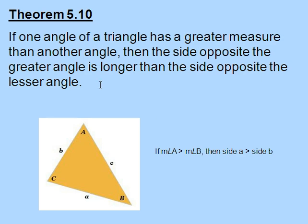Theorem 5.10 says kind of the same thing, it's in the other order. If one angle of a triangle has a greater measure than another angle, then the side opposite the greater angle is longer than the side opposite the lesser angle.